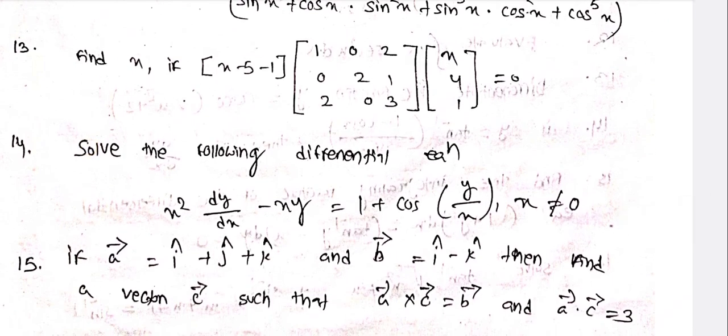Find x if [x-5, -1; 1, 0][2, 0; 2, 1][2, 0; 3, x] = [4, 1; 0, 0].